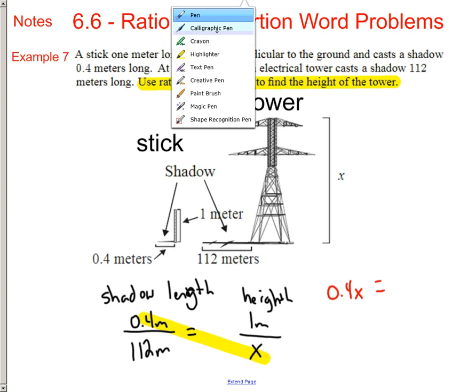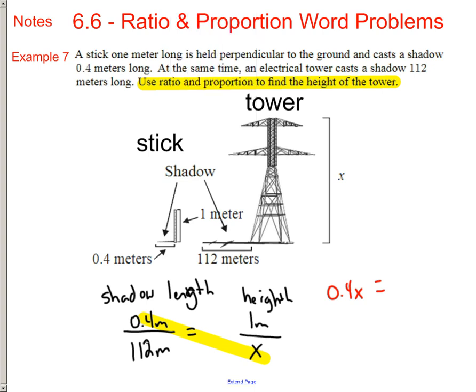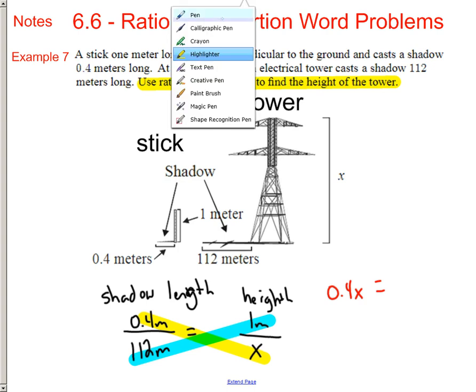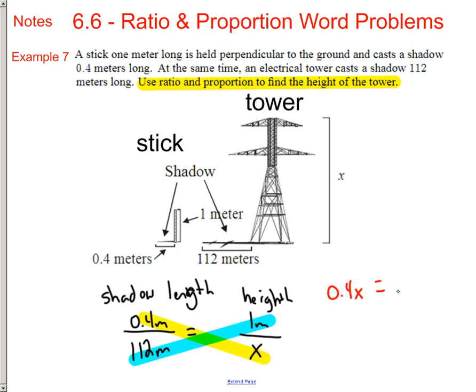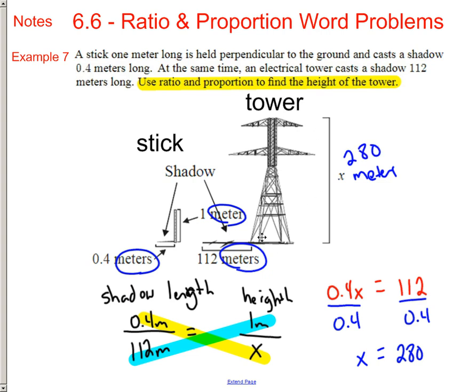The height of the object is 1 meter for the stick. So the stick information is up on top, and because the tower information is bigger, I'm putting that on bottom. I don't know how tall it is, so there's an X. So now you can actually cross-multiply. 0.4 times X is 0.4X equals 112 times 1. 112 times 1 is 112. How do we get the 0.4 away from the X that's multiplying it? We can divide by 0.4 and divide this by 0.4. And we find out that X is equal to 280.